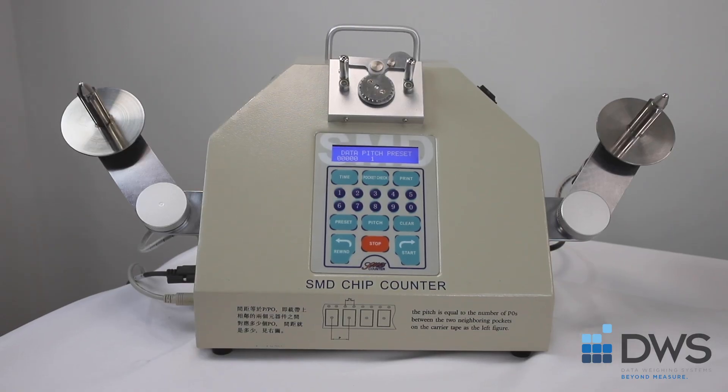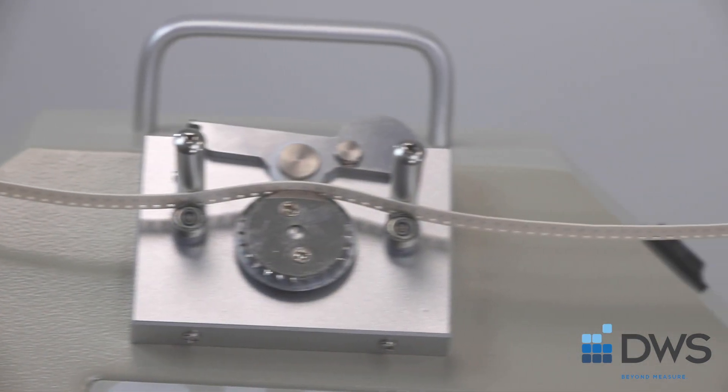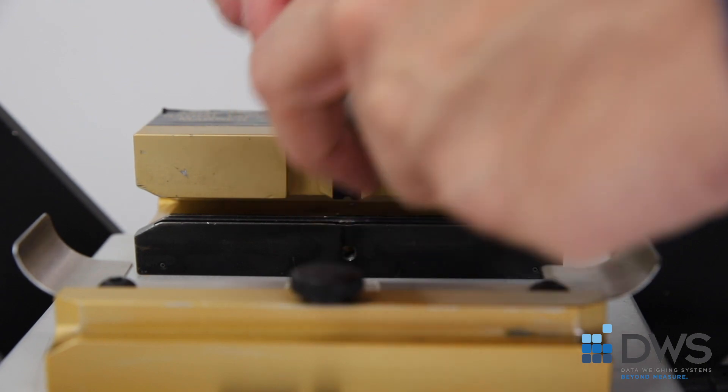Both reel counters use a photoelectric sensor and function by counting the holes, or in the case of a radial component, it will actually count the leads.